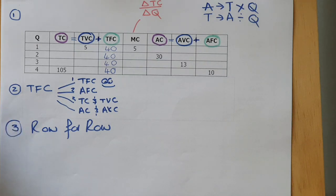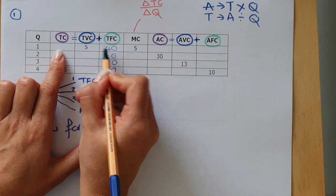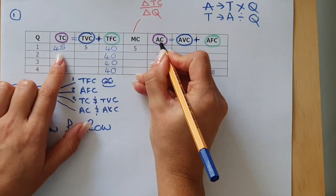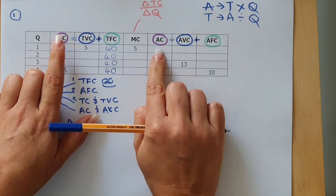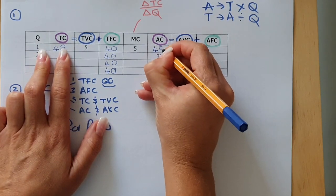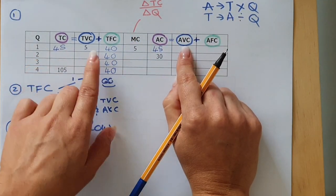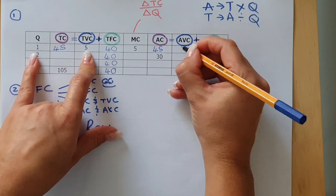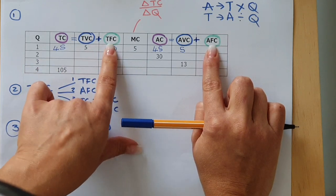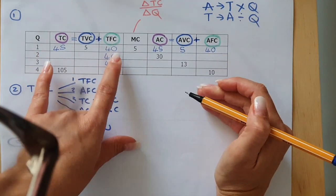Let's go through row 1. Can we solve Total Cost? Yes — 5 plus 40, variable cost plus fixed cost, gives Total Cost of 45. Can I get Average Cost? Yes, because its pair is Total Cost: 45 divided by 1 is 45. Average Variable Cost — its pair is Total Variable Cost: 5 divided by 1 is 5. Average Fixed Cost — its pair is Total Fixed Cost: 40 divided by 1 is 40. Now move on to the second row.